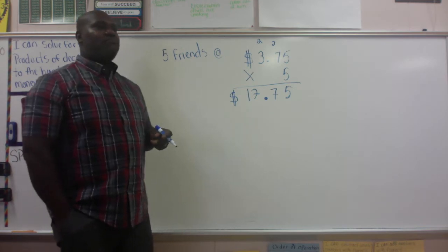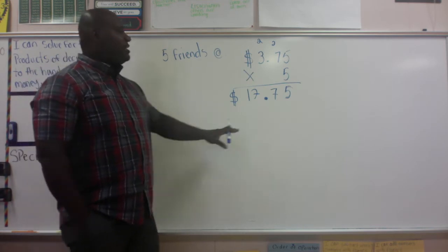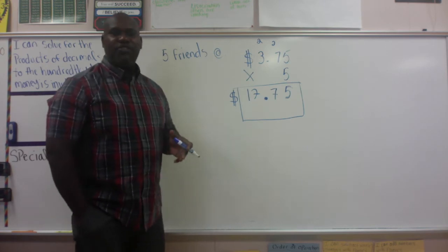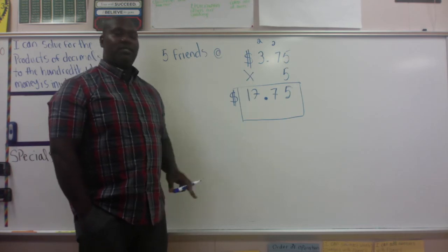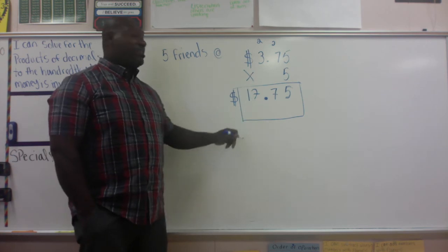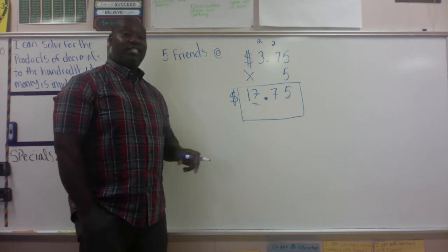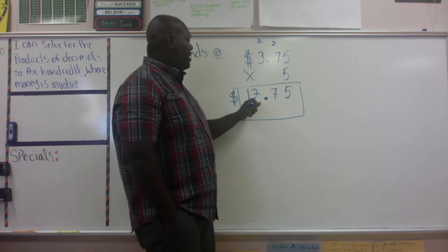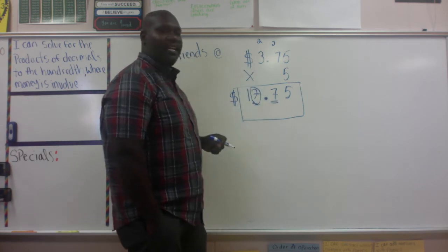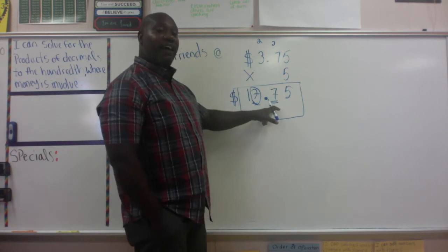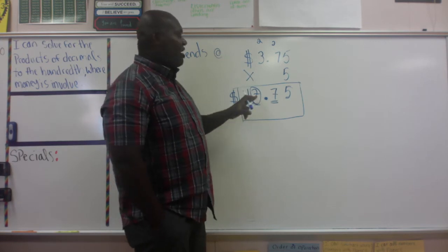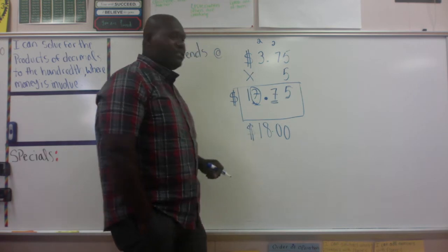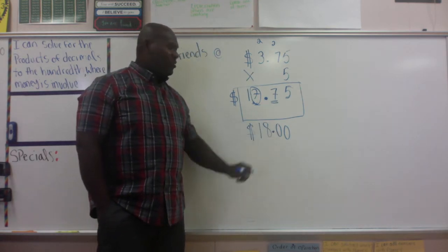Now, let's say somebody asked about how much money you spent to the nearest dollar. To estimate to the nearest dollar, I look at the 7 in $17.75 and underline the digit behind it. My rounding rule says if that digit is five or more, I add one to my target. My target was seven, so since I'm adding one, I estimated that I spent $18 on my friends. Keep in mind that the dollar sign has to be there.